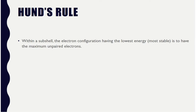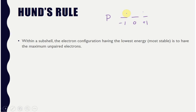Hund's rule states that within a subshell, the most stable electron configuration is the one with the maximum number of unpaired electrons. For the p sublevel with three orbitals (−1, 0, +1), you do not pair electrons immediately — you first put one electron in each orbital (all spin-up), and only once every orbital has one electron do you come back and pair them. This minimizes repulsions by spreading electrons out first — like spreading out in a beach house with three bedrooms rather than piling into one.